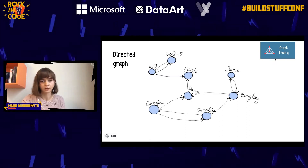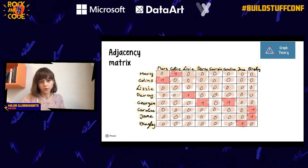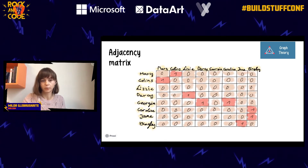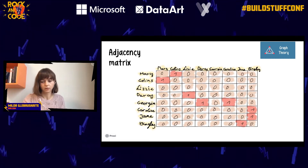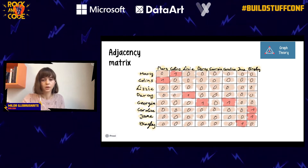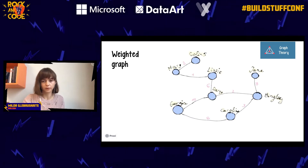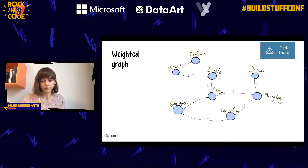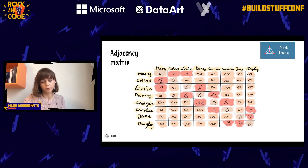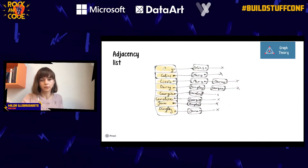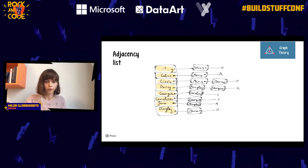A directed graph can be represented as an adjacency matrix: ones if people follow each other, zeros if they don't. A weighted graph — for example, people who live in the same neighborhood with the distance between them — can also be represented in an adjacency matrix holding those values. Alternatively, a graph can be represented as an adjacency list: a set of nodes mapped to their neighbors. This is something very easily represented as a computer program.